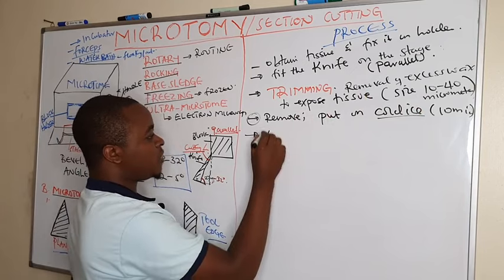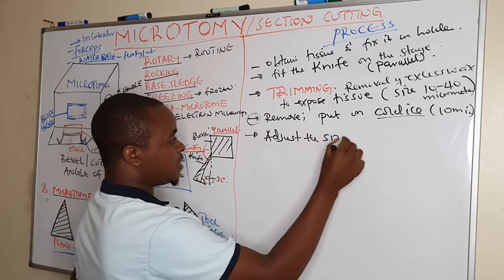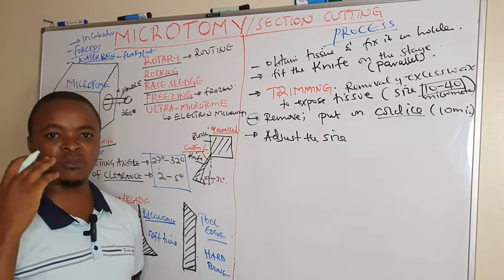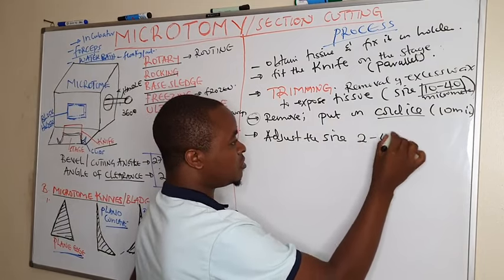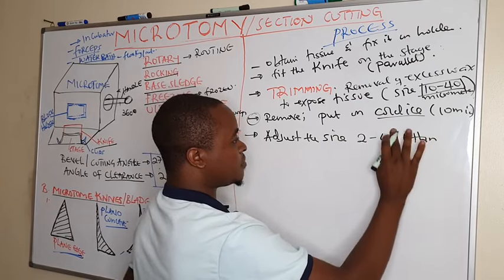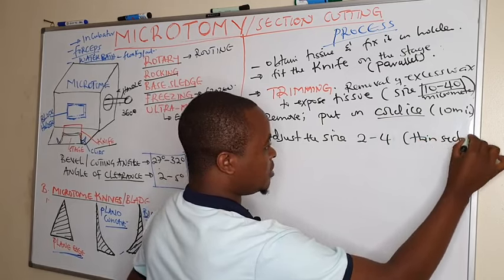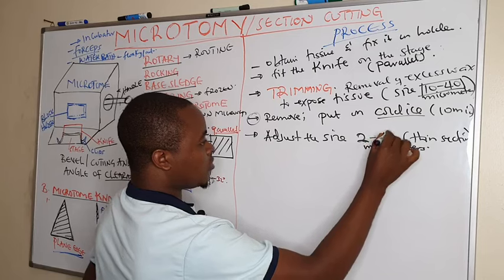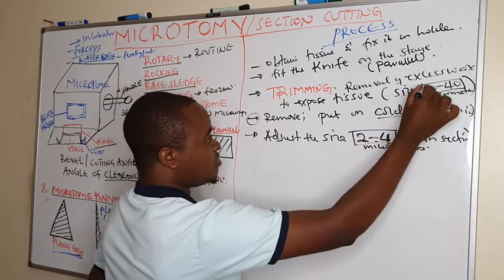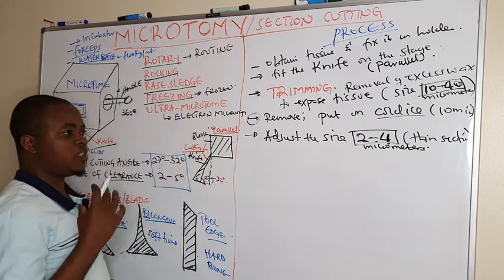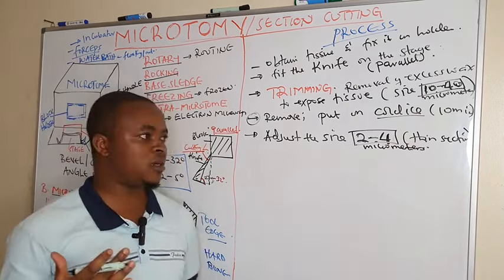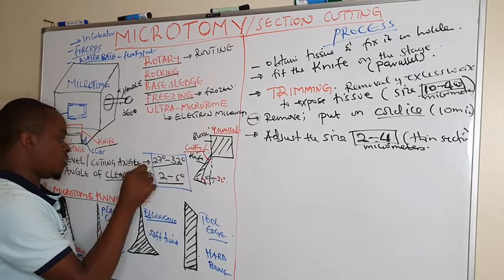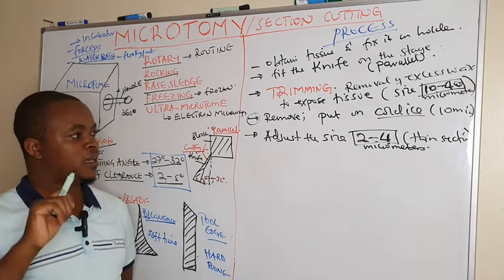After cooling it on the cold ice, bring it back and fit it on the block holder. Now we are ready for section cutting — adjust the cutting size from the trimming size down to 2 to 4 micrometers to enable cutting of thin sections. Make sure the knife is parallel with the block, the angle of clearance and bevel angle are set, and the knife is tightly clipped on the stage.